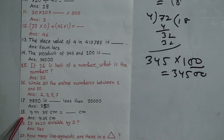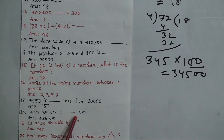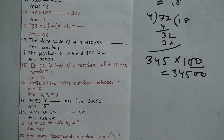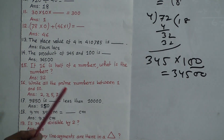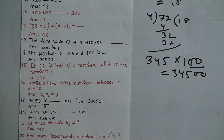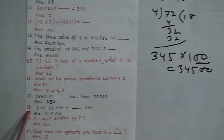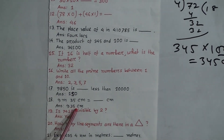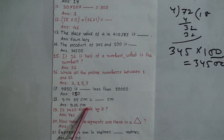Question 18: 9 meters 35 centimeters equals how many centimeters? We know 1 meter equals 100 centimeters. So 9 meters equals 900 centimeters. Then 900 + 35 = 935 centimeters. Our answer is 935 centimeters.